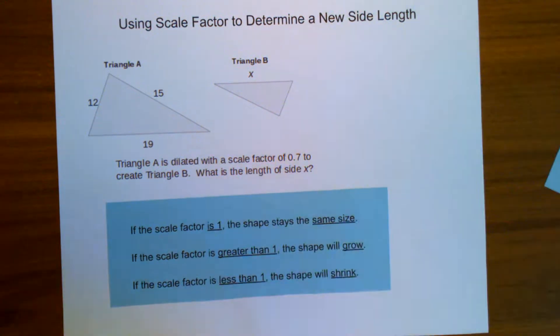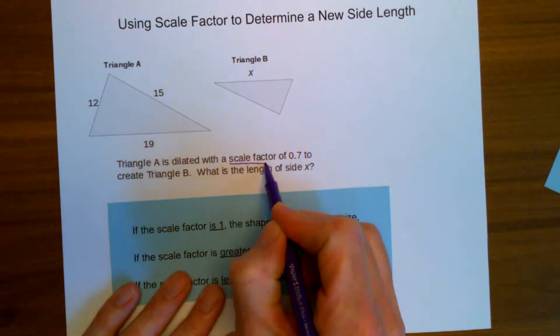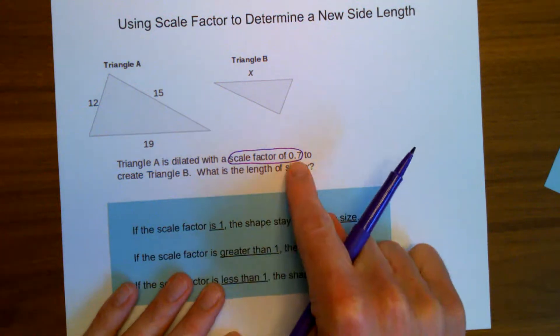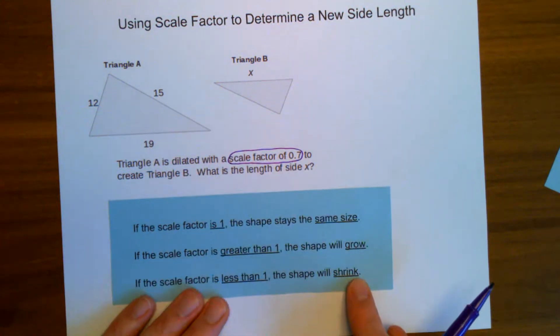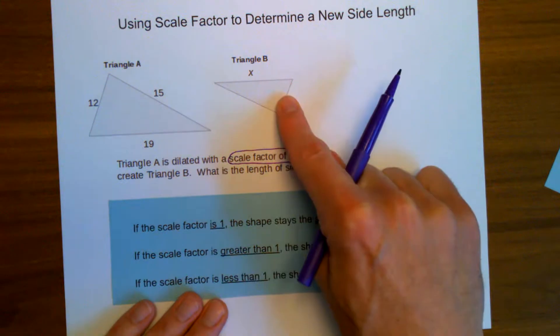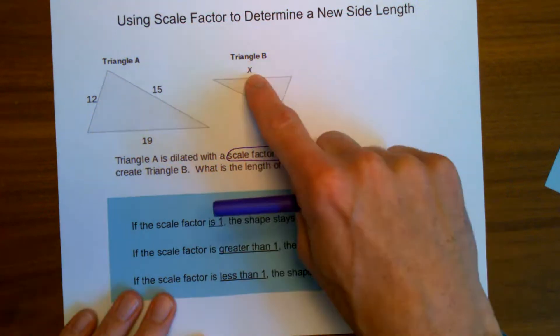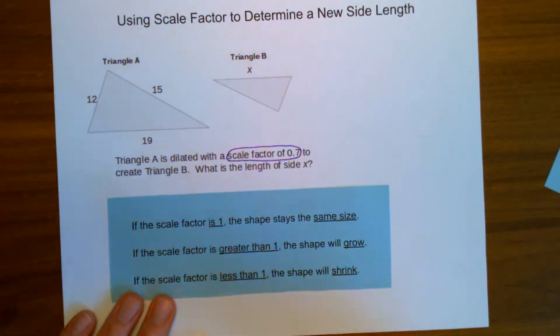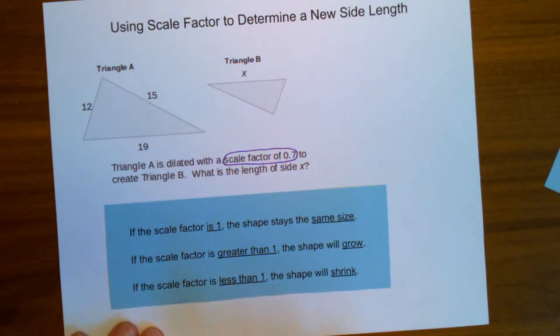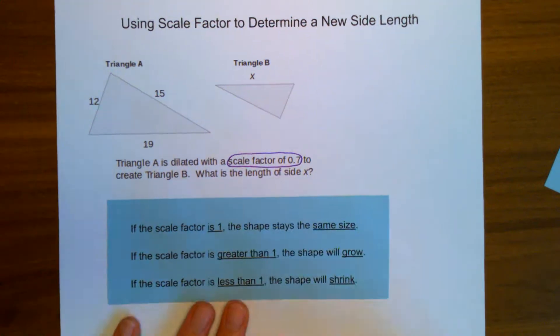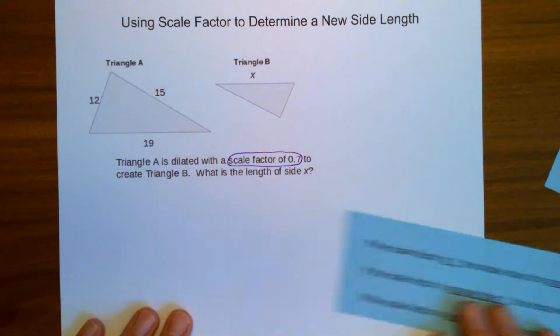Here, it says that the scale factor, right there, the scale factor is 0.7. So I know that's less than 1. It's going to make my shape shrink. And sure enough, the triangle is smaller. So the triangle is smaller. And I know that whatever the value here is, it's going to be smaller than its original value back over here. So before I calculate, I know I have to multiply by 0.7. But the most important thing I need to do is figure out what am I multiplying by 0.7?